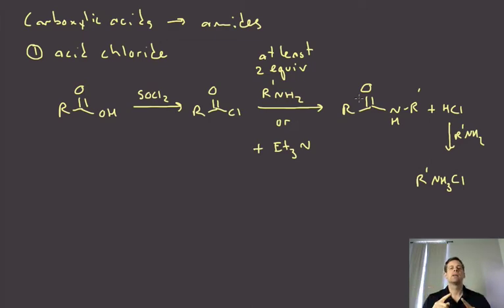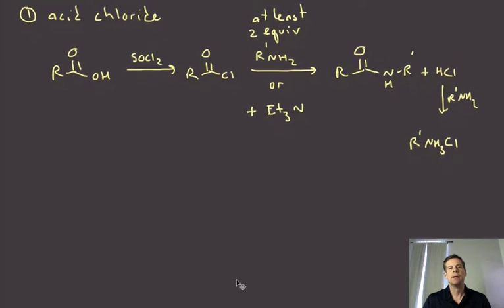So just keep that in mind that your two options are to add at least two equivalents of your amine reactant. If you don't care about it, if it's simple, you don't care, that's fine, methyl amine or something like that. But if you do care about it and you only want stoichiometric, then you have to add an exogenous additional base in the form of usually triethylamine or something similar. Okay. That's really straightforward. I mean, this is super reactive electrophile, amines are very nucleophilic. And so this reaction is usually quite rapid and efficient.